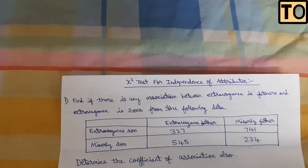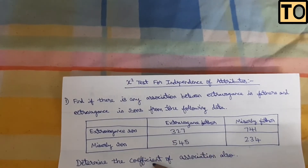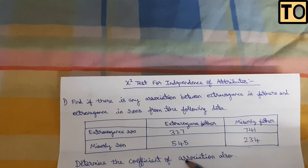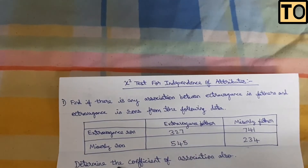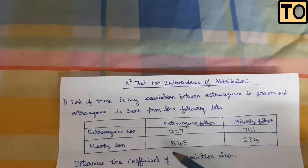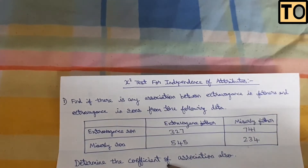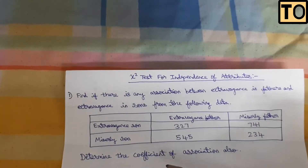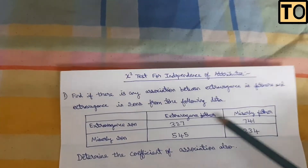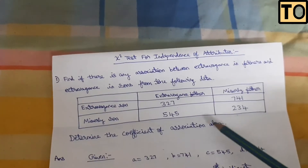How do we determine the coefficient of association? We can use a,b,c,d values from the 2x2 table. In the previous video, we discussed this formula using a, b, c, d in a 2×2 arrangement.